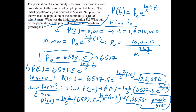In this problem, we first came up with a differential equation that we solved by separation of variables. Using the given conditions, we were able to get the exact function we needed. Using that function, we evaluated the population after 10 years and also obtained the rate of growth of the population at 10 years.